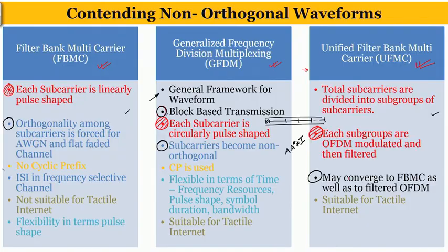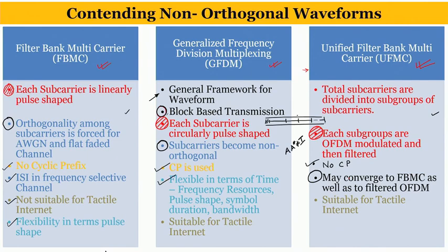In FBMC there is no cyclic prefix; in GFDM there is a cyclic prefix for the entire block; and in UFMC there is also no CP. In FBMC, ISI is present in frequency-selective channels, making it not suitable for tactile internet, but it is flexible in terms of pulse shapes. GFDM is flexible in terms of the time-frequency resource grid — one can reduce the number of blocks, increase the number of sub-bands, and basically tile frequency and time as desired depending upon the application scenario.